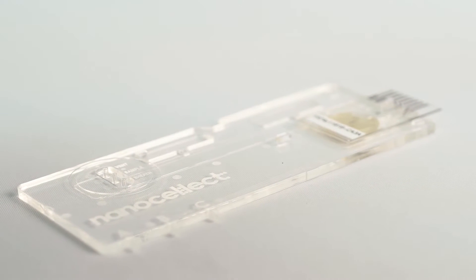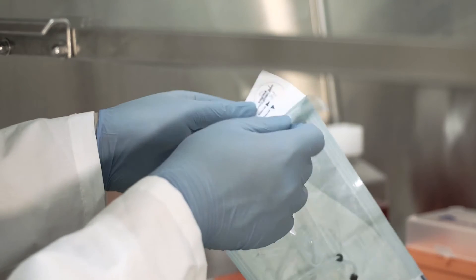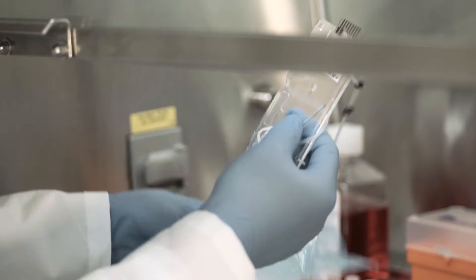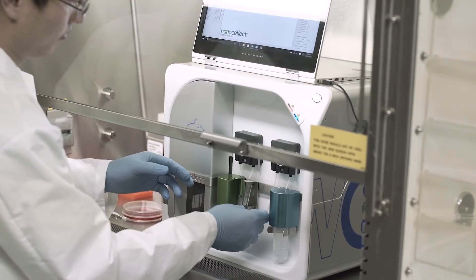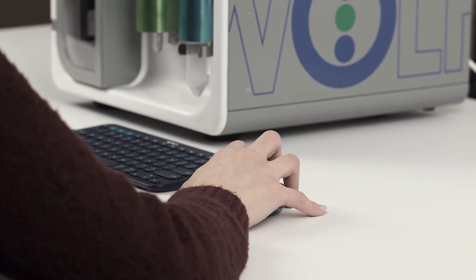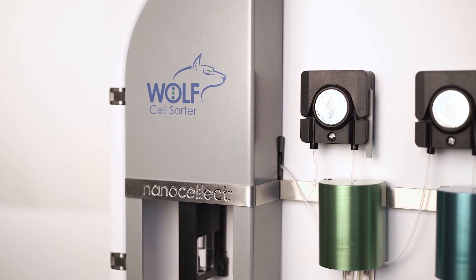This cartridge allows us to have many advantages. The fluidic system is designed so that anything the sample touches is disposable. Your co-workers can each be using the cell sorter at their own pace with their own cells and not worry about cross contamination. And it's much more gentle on the cells so that there's a lot higher cell viability.